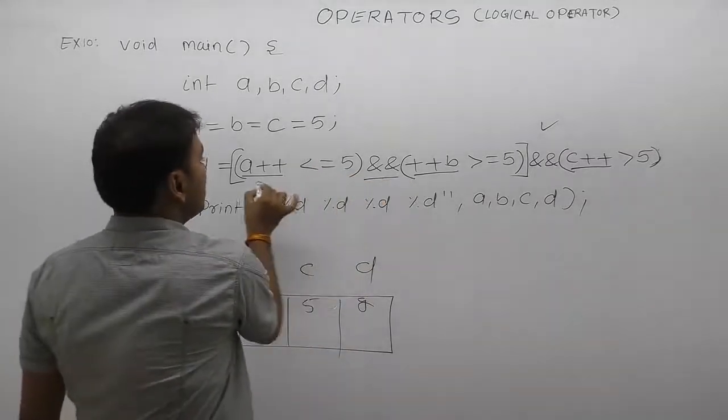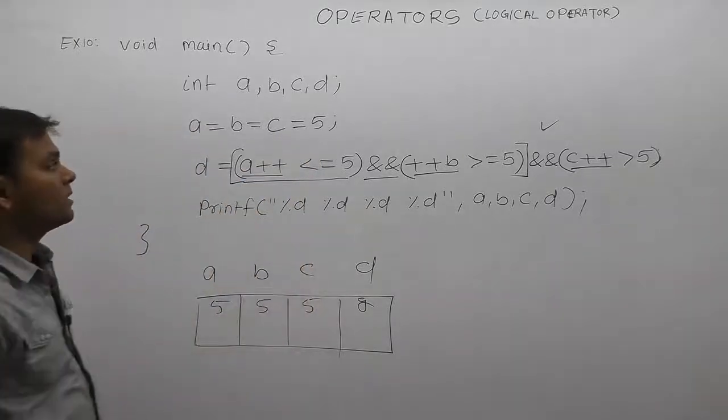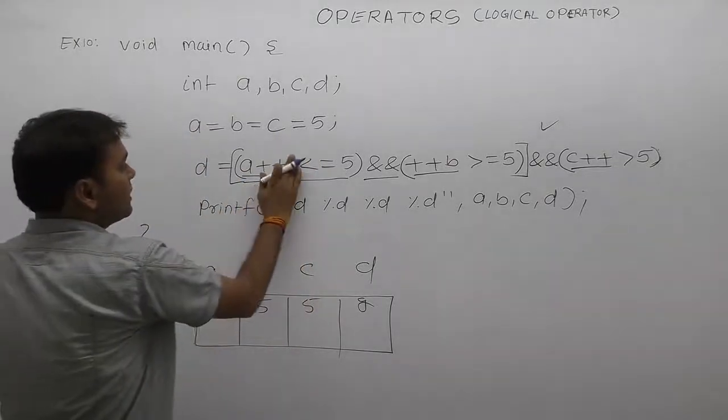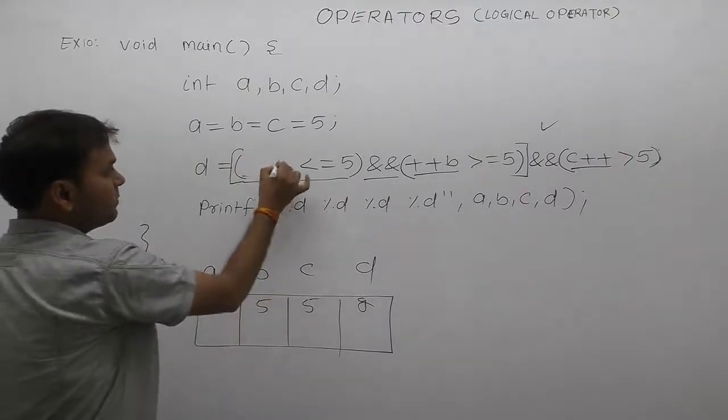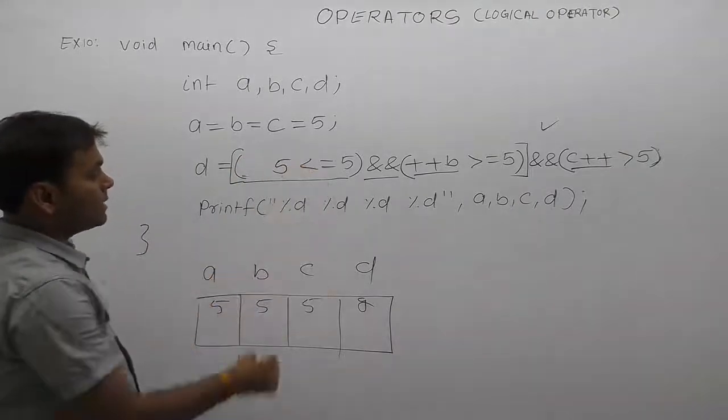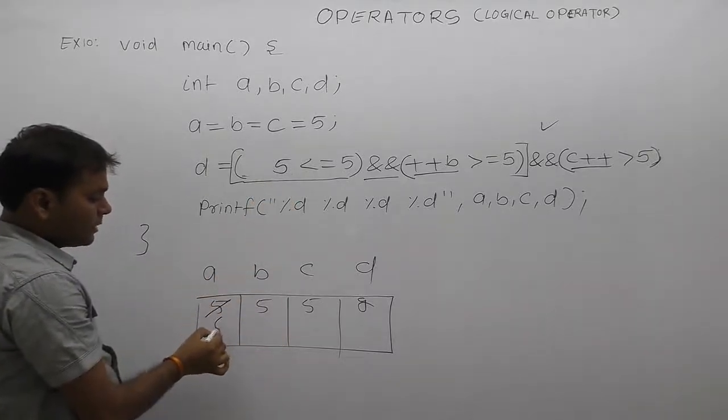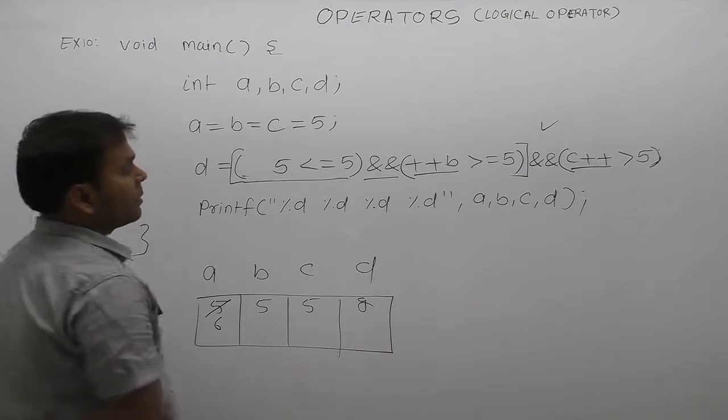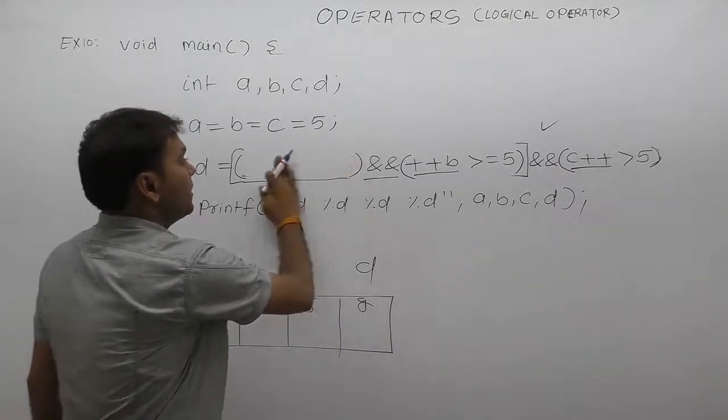Left expression is solved. First of all, a++ post increment. Post increment - according to its rule, the current value is replaced. Current value of a is 5, therefore 5 is replaced here. After that, a gets incremented by 1. This one becomes 6. Now 5 less than equals to 5 - condition is true. True means 1.